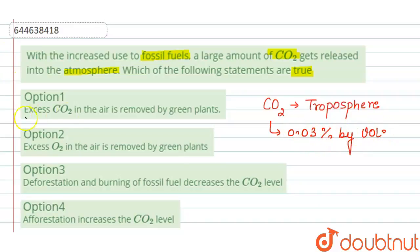Now the first statement that excess CO2 in the air is removed by green plants. So the statement is correct because the green plants, they take up carbon dioxide from the atmosphere for photosynthesis and they emit oxygen, and thus they maintain the balance in atmosphere. So the first statement is correct.